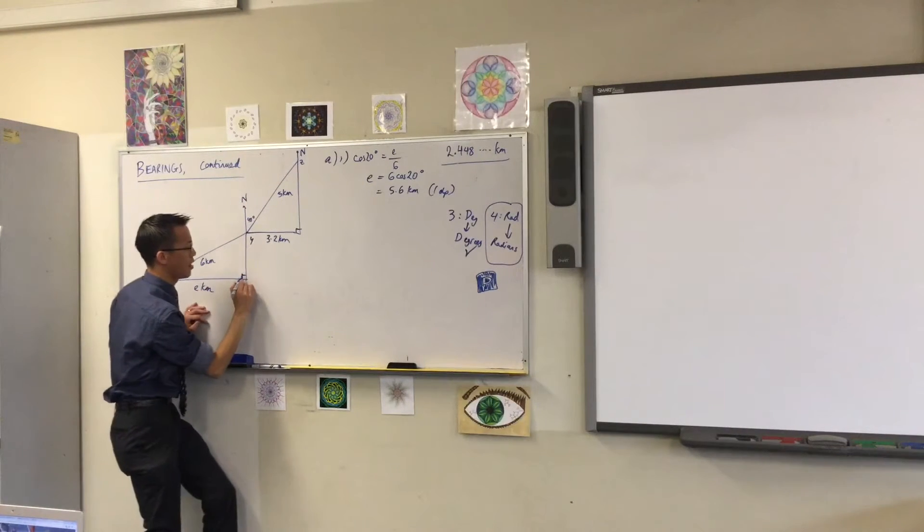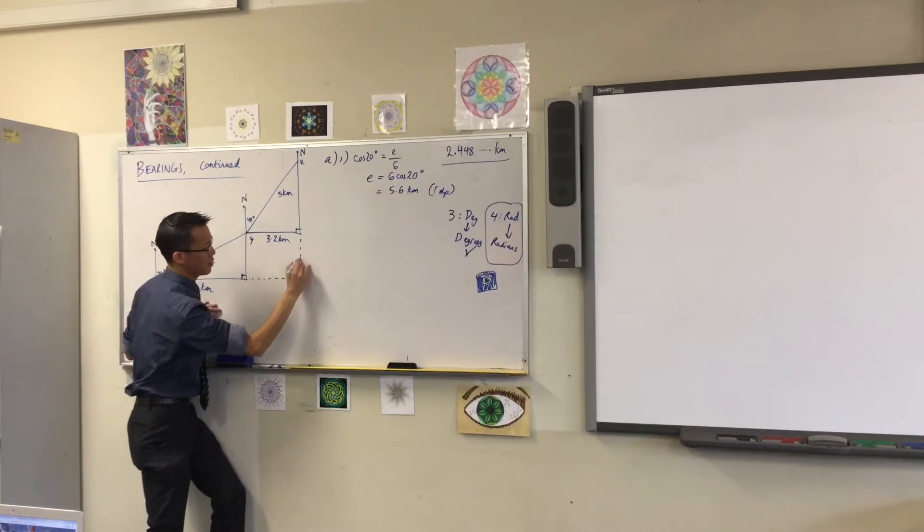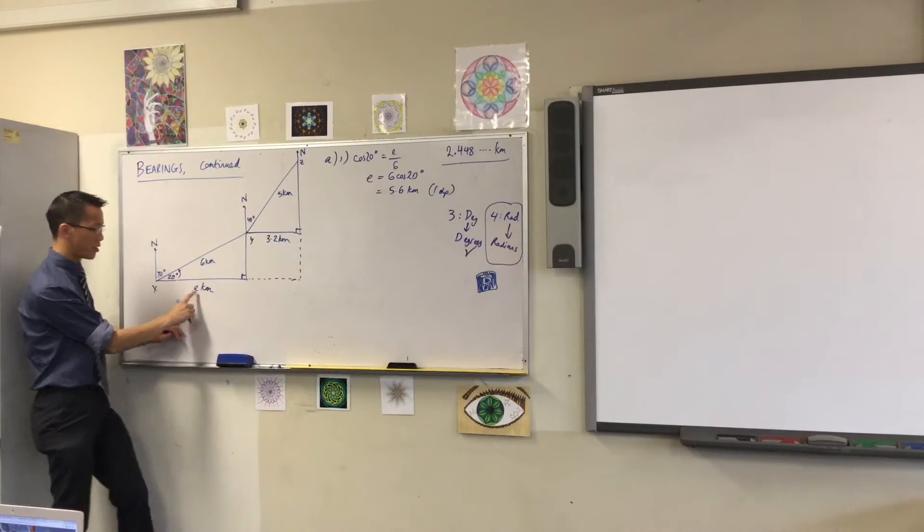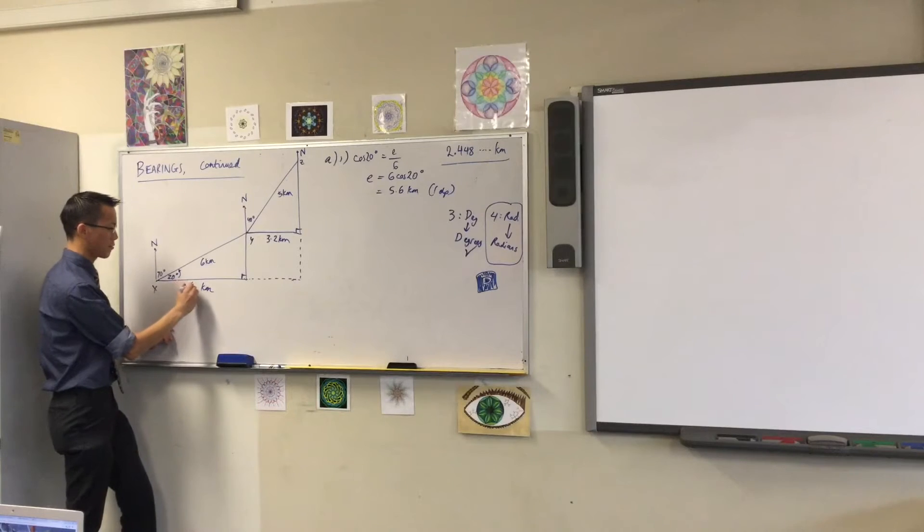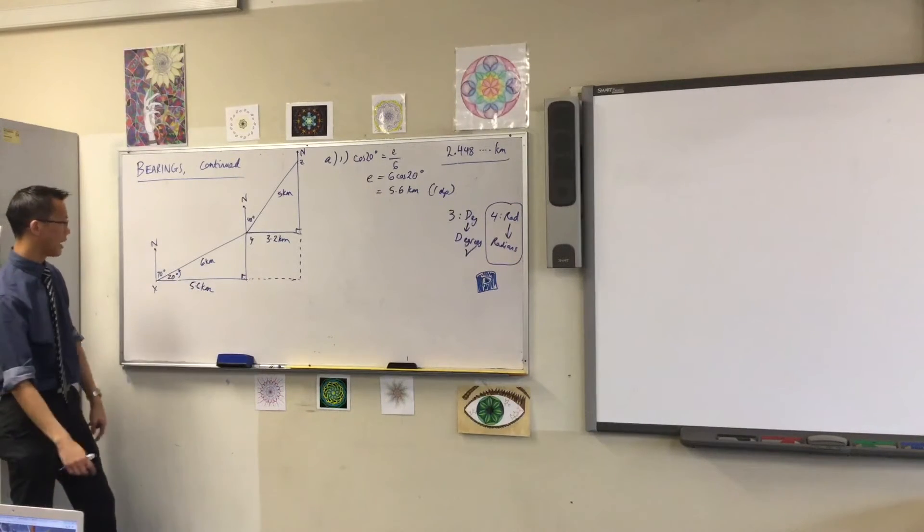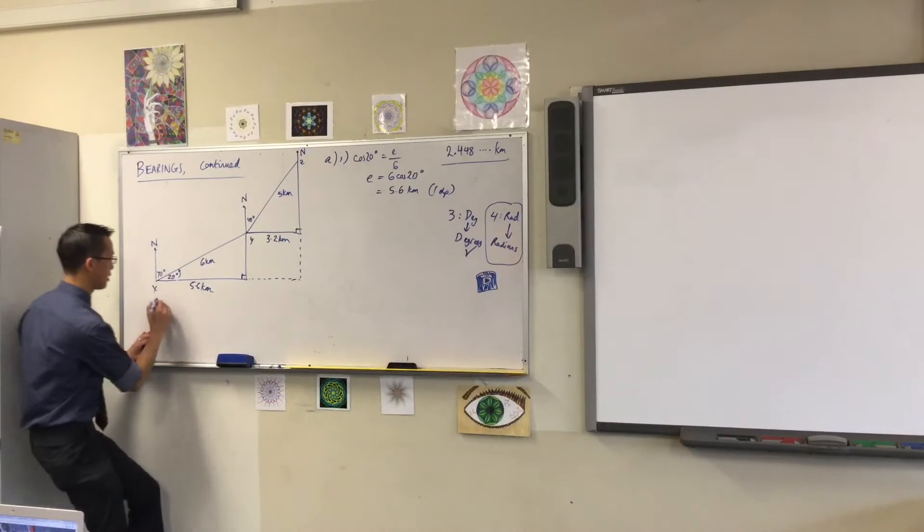So I'm actually going to put another set of lines over here, like so. You see that? This was 5.6. That was 3.2, so what's the total? 8.8. Thumbs up.